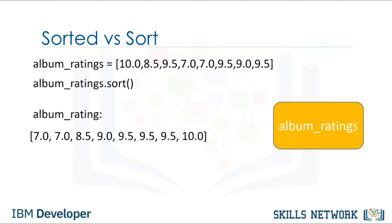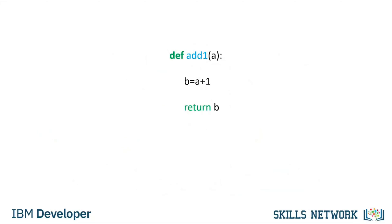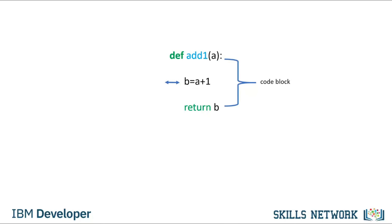This is an example of a function in Python that returns its input value plus one. To define a function, we start with the keyword def. The name of the function should be descriptive of what it does. We have the formal parameter a in parentheses, followed by a colon. We have a code block with an indent — in this case, we add one to a and assign it to b. We return the value for b.